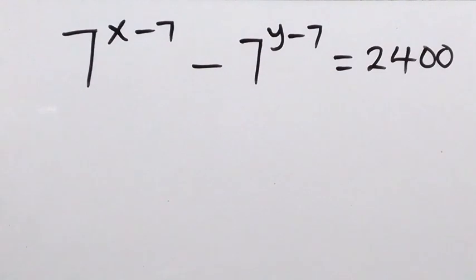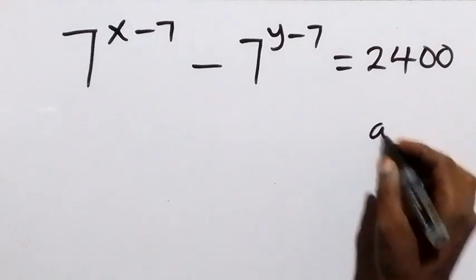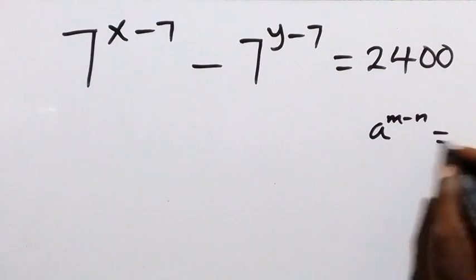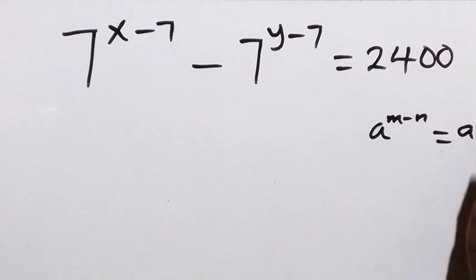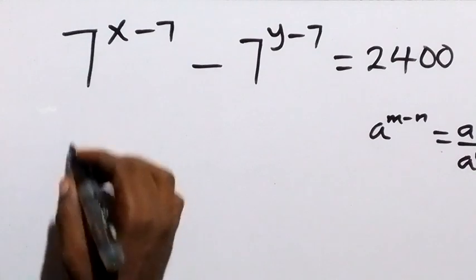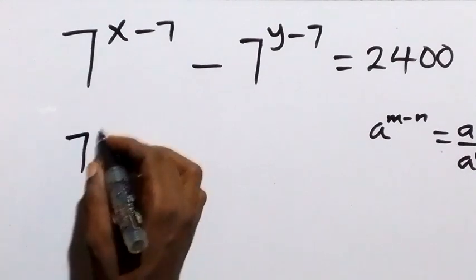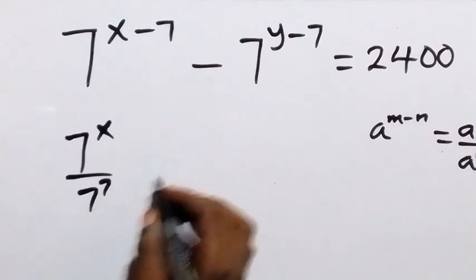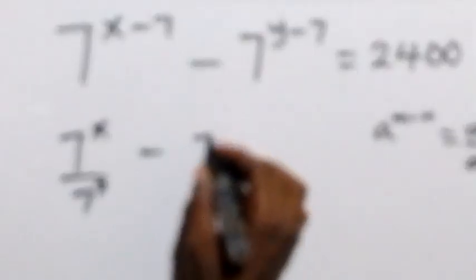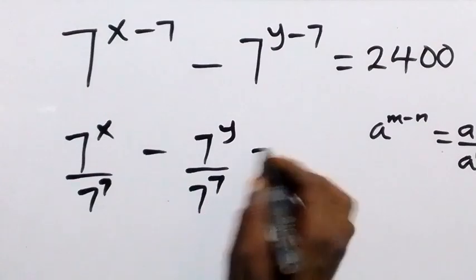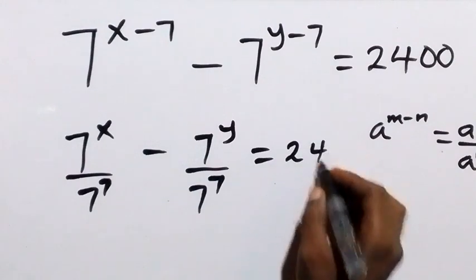From here, we can apply the law of indices: a raised to power m minus n equals a raised to power m divided by a raised to power n. When we write that in that format, this becomes 7 raised to power x divided by 7 raised to power 7, minus 7 raised to power y divided by 7 raised to power 7, equals to 2400.